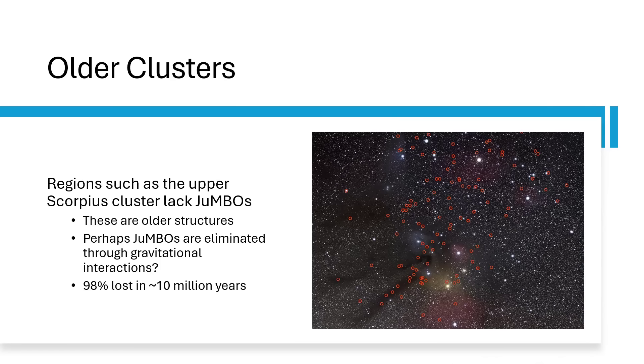So maybe that's why we're not seeing any in this older cluster, whereas the Orion nebula being much, much younger than 10 million years, more like 1 million years, maybe even 200,000 years since the jumbos were formed, it's entirely possible that we're still seeing some.